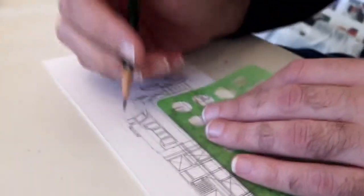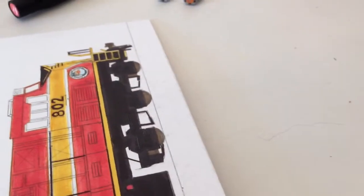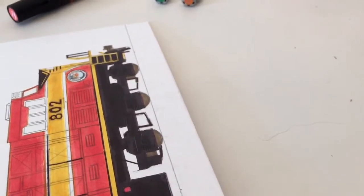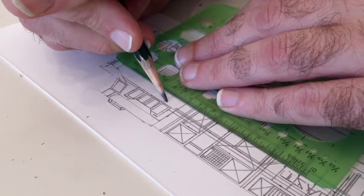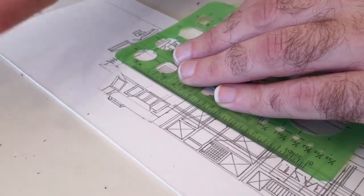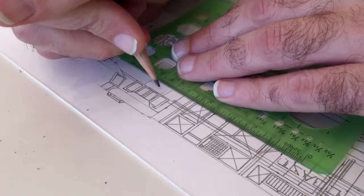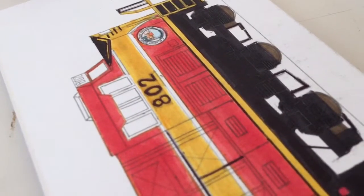The number underneath the cab - the most important part besides just making the number look refined and accurate - is that if the paint scheme calls for it, you want to have the number be centered under the cab, which 9 out of 10 paint schemes do call for the number to be centered under the cab.